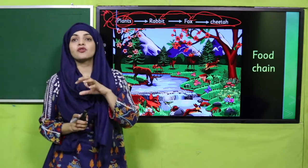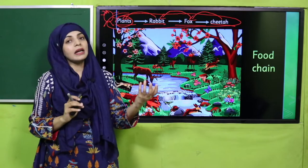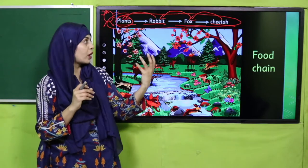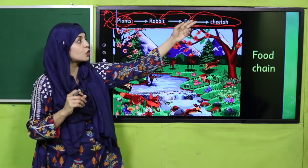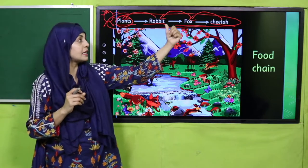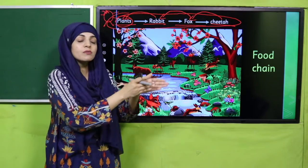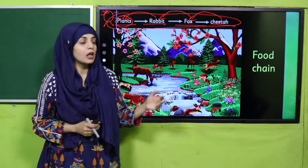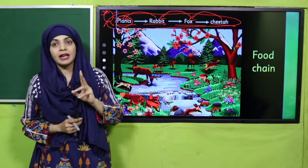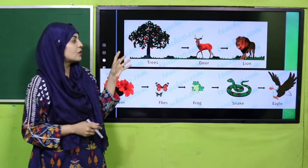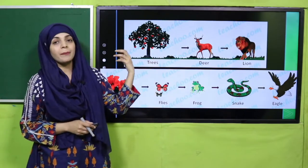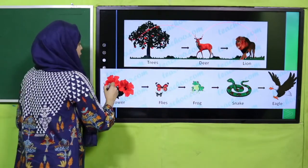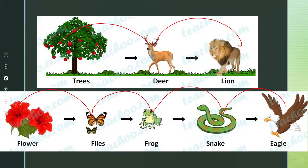Plants get their food from sunlight, so the energy of the sun is transferred to the plant. When the rabbit eats the plant, it takes that energy. When the fox eats the rabbit, it takes the energy of the plant and the sun. Finally, the top consumer — the cheetah — eats the fox. In this way, energy flows from organism to organism through food, and this transfer is called a food chain. For example: tree → deer → lion is another food chain.